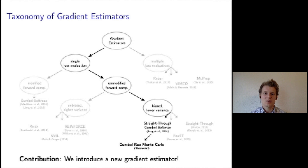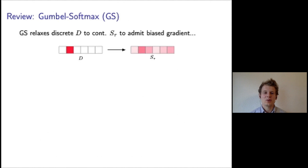In this work, we introduce a new straight-through estimator: Gumbel-Rao Monte Carlo. Our estimator is a single loss evaluation, unmodified forward computation estimator. It is based on a Rao-Blackwellization of a straight-through Gumbel softmax estimator. Therefore, we will next review the Gumbel softmax estimator and its straight-through variant.